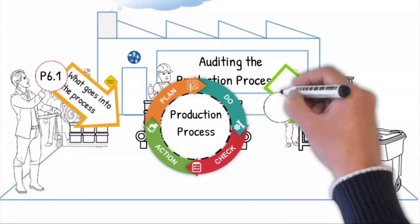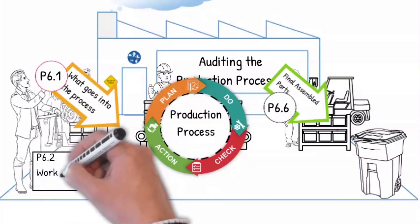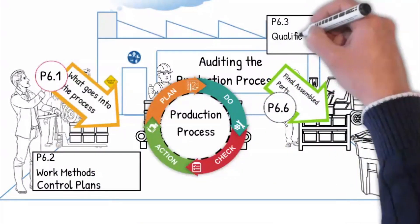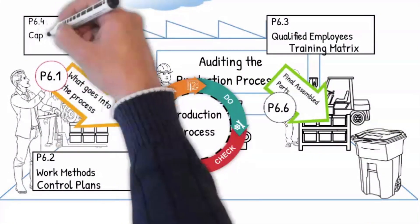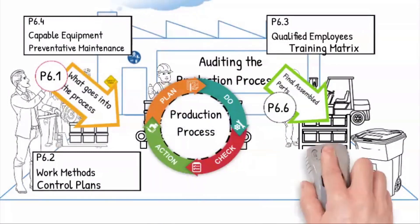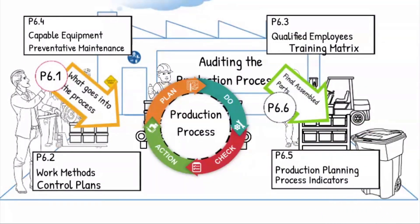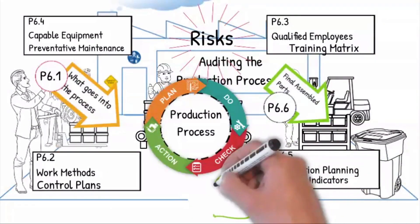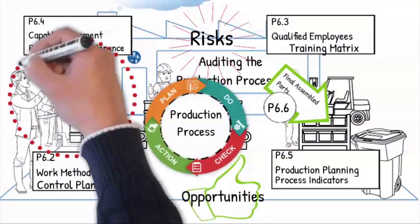In the following tutorials we will assess P6.2 to ensure that the special characteristics are included in the control plans and work instructions. P6.3 to ensure that the employees are qualified to do the job right first time, with capable equipment as required in P6.4. In P6.5 we will assess the effectiveness and efficiency of the production process, and in P6.6 how the customer requirements were achieved at the delivery of the final product.